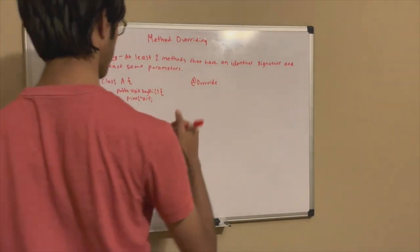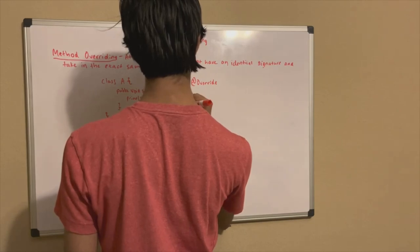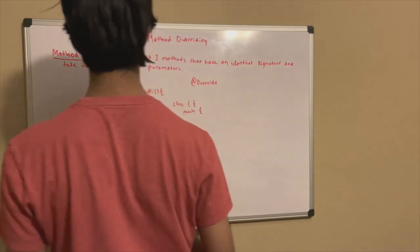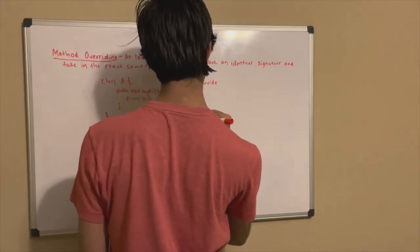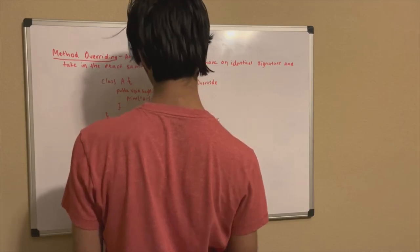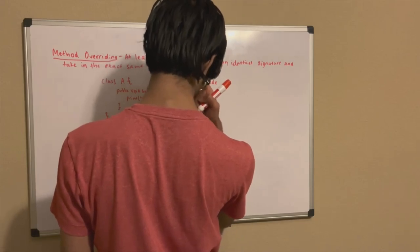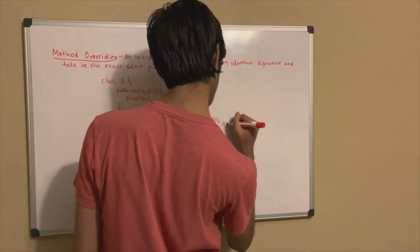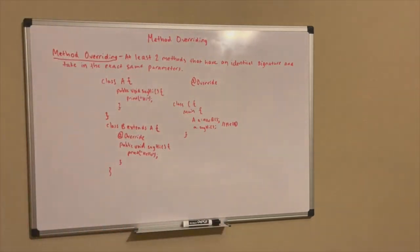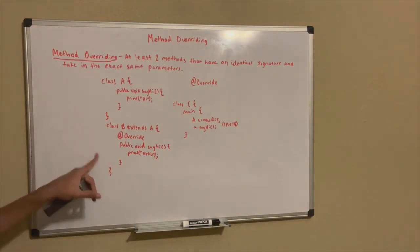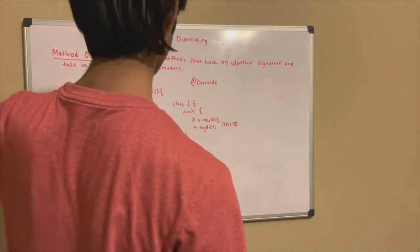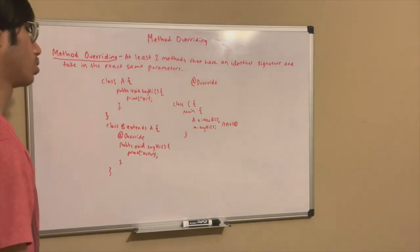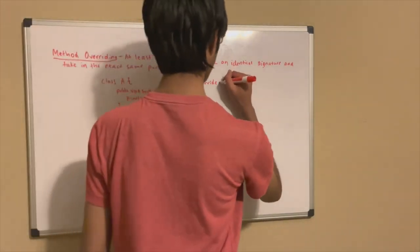Then if we make an object in another class C with a main method, and we make an object referencing the parent class but creating a new object of the child class, and then make a call to the method — it prints hello. So what happened is we overrode the method: we referenced the parent class, created a new object of the child class, called the method, and it printed hello.